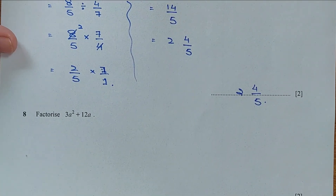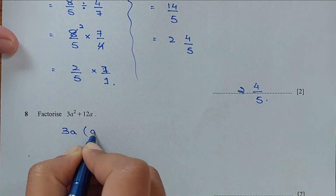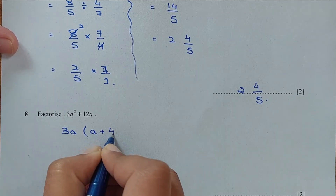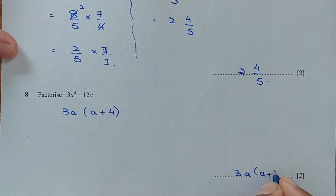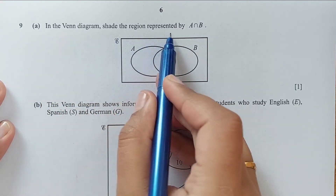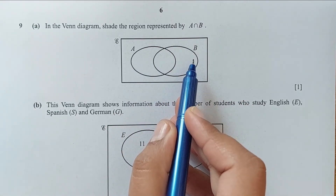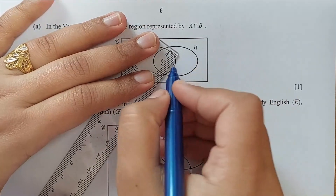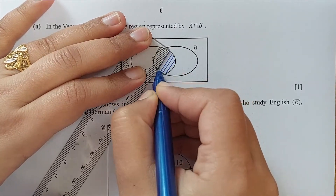Question number 8, factorize this expression. 3 is a common factor and A is also a common factor, so we get 3A(A + 4). Question number 9, part A. In the Venn diagram, shade the region represented by A intersection B. The intersection is the common region, so the shaded region is A intersection B.